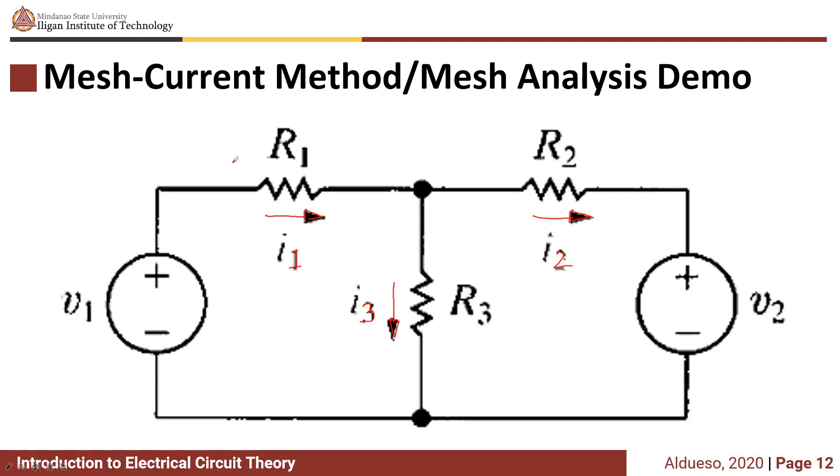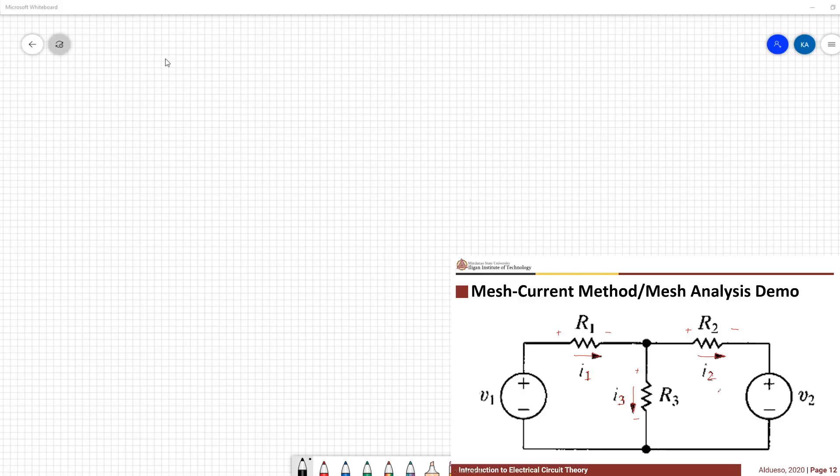To follow the positive sign convention, we're going to assign voltage polarities to each resistor. Applying KCL at the top center node, let's label that node as node A. We have i1 equivalent to i2 plus i3, which gives i3 equivalent to i1 minus i2.